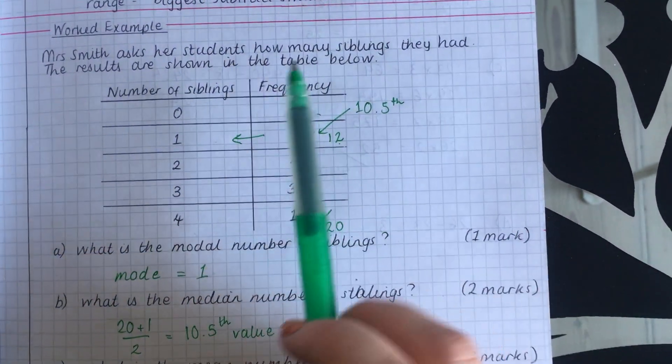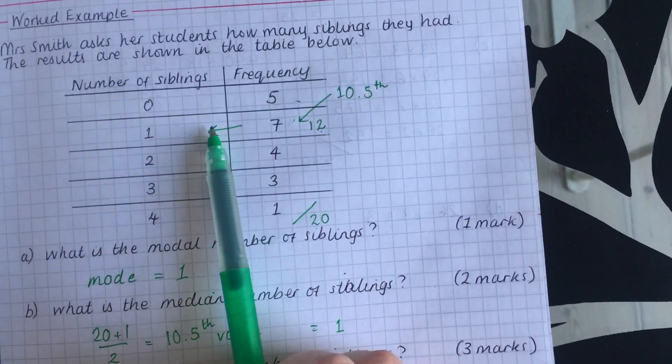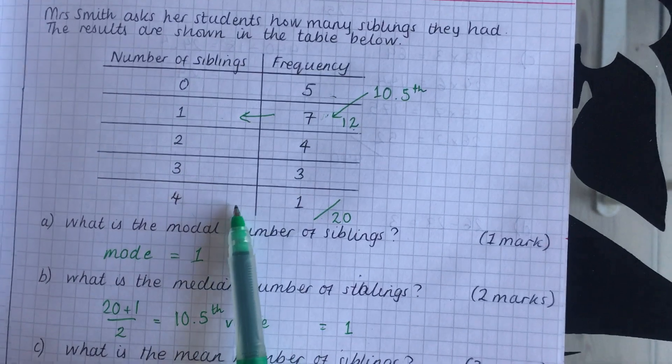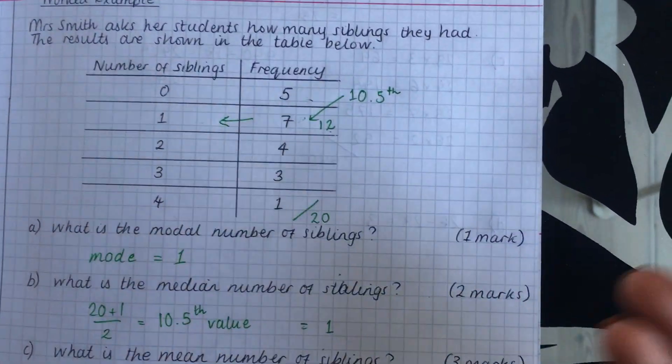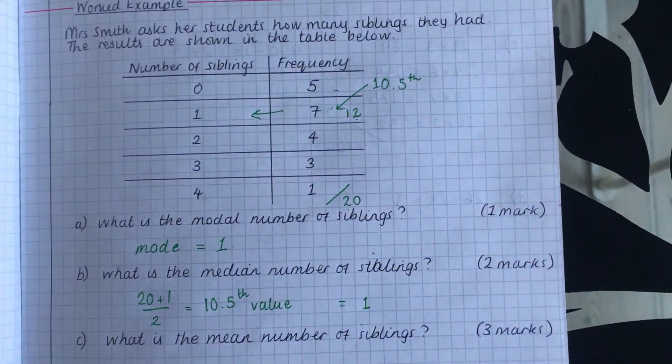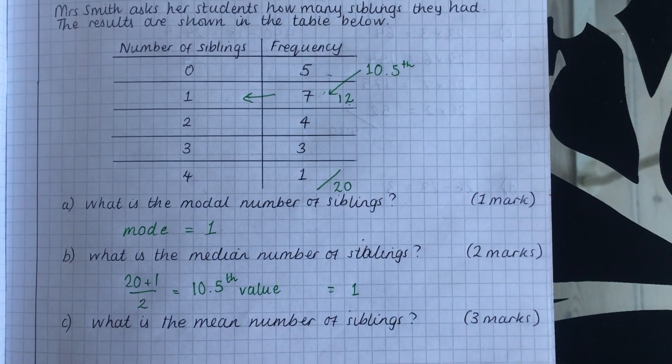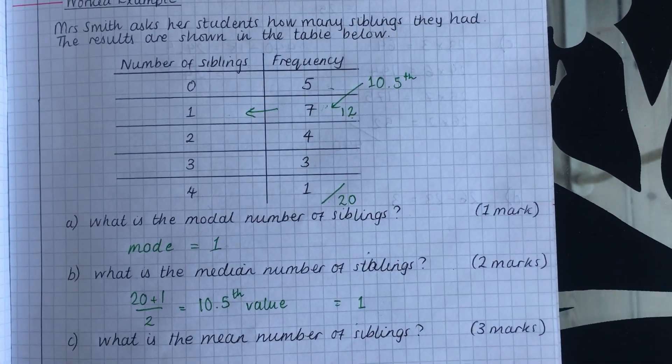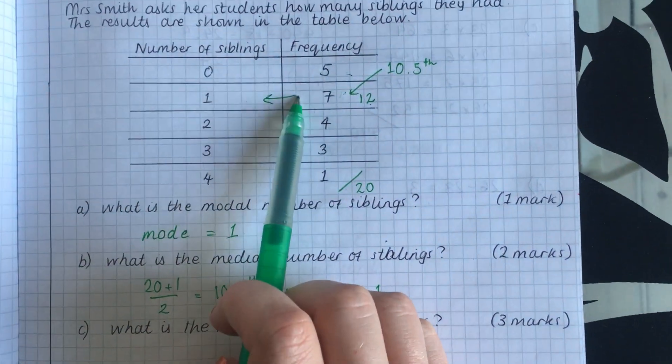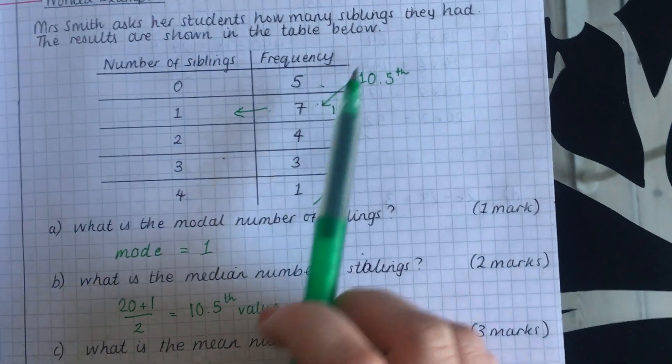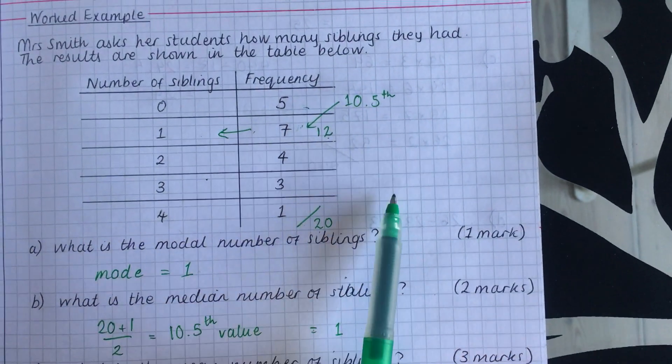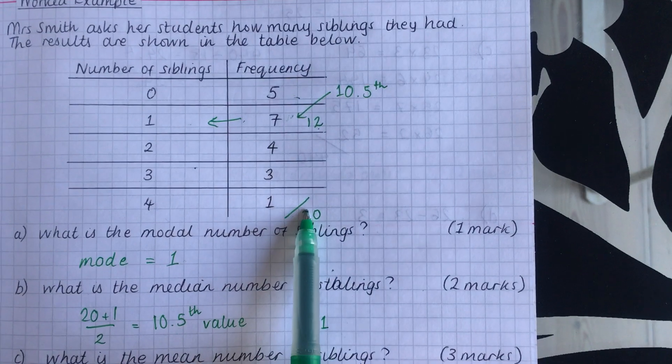So the mean - if you imagine that we wrote down five zeros, seven ones, four twos, three threes and one four, we'd have to add them all together. Now, we're not going to list them because that takes too long. So what we actually need to do is multiply these things together first and then we get individual totals. Then we can add those up and then divide by 20.